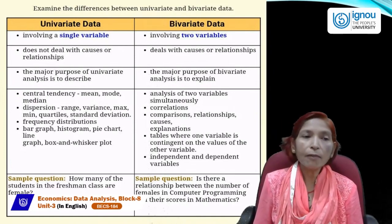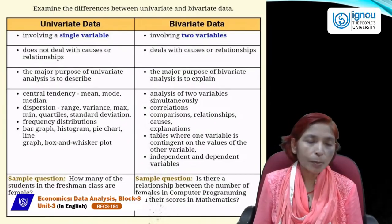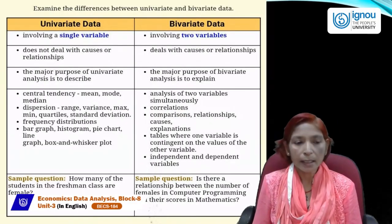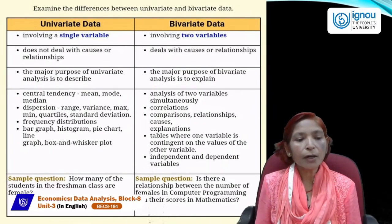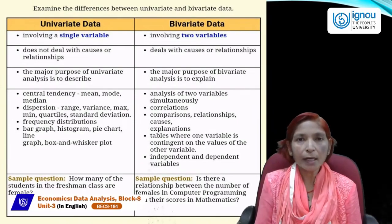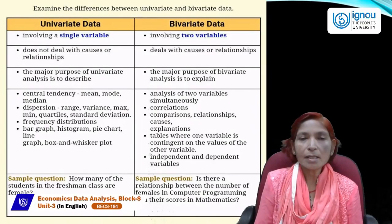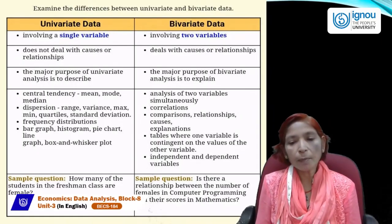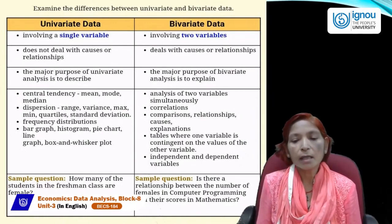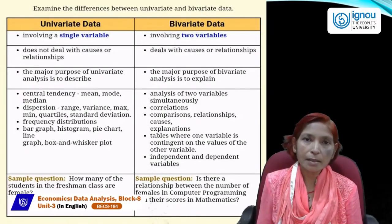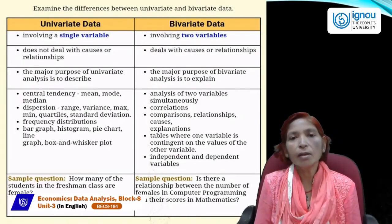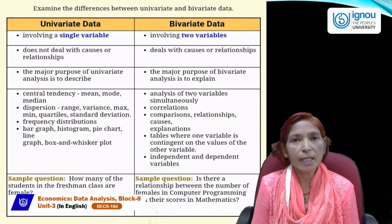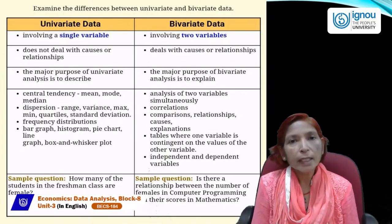If we include only a single variable in our study or research, that is called univariate data. For example, if we are studying how many students in the freshman class are female, we are studying only one variable — that is univariate. But if we are studying whether there is a relationship between the number of females in computer programming and their scores in mathematics, that involves two variables — that is called bivariate data.